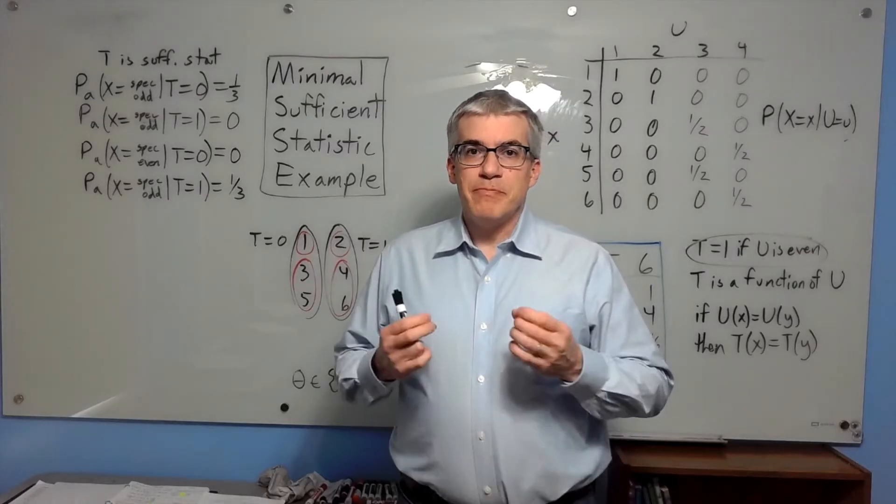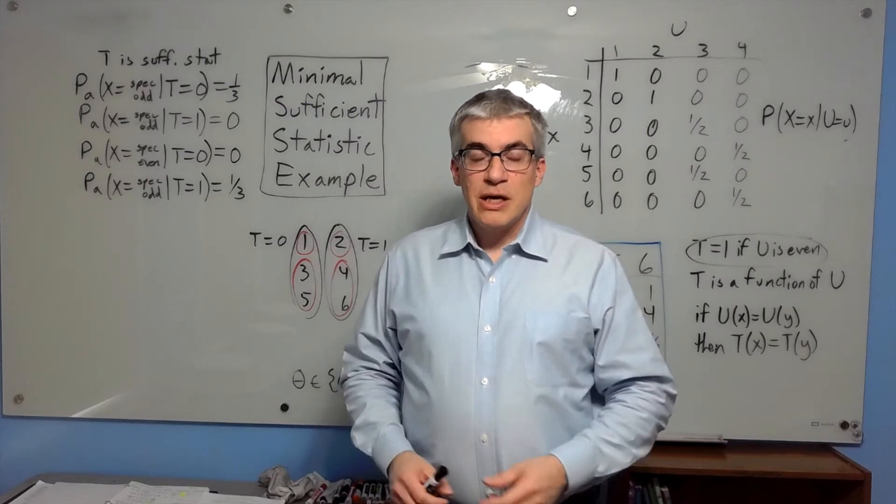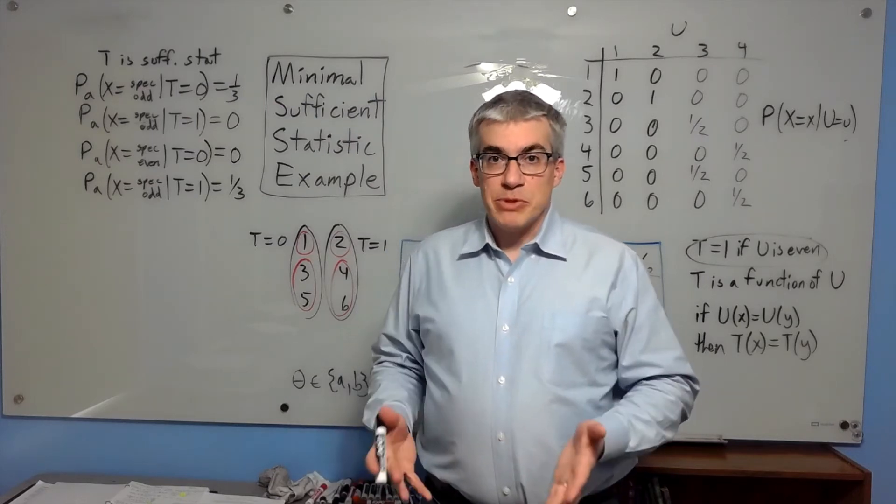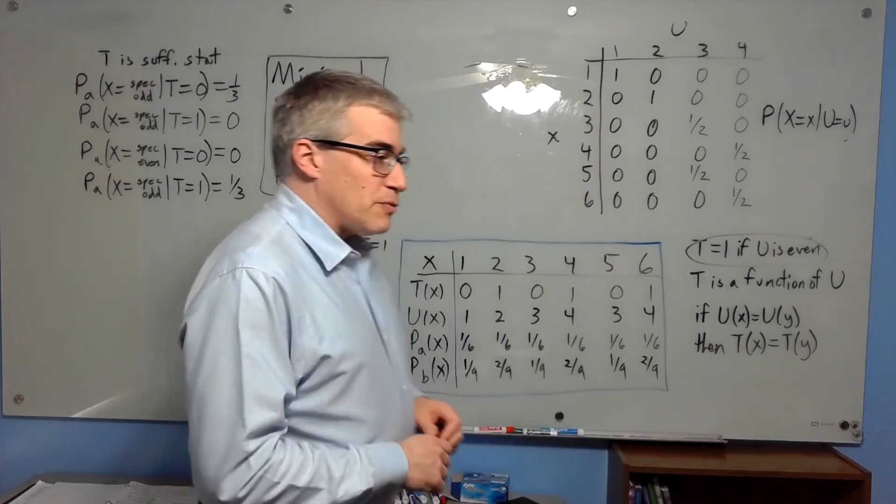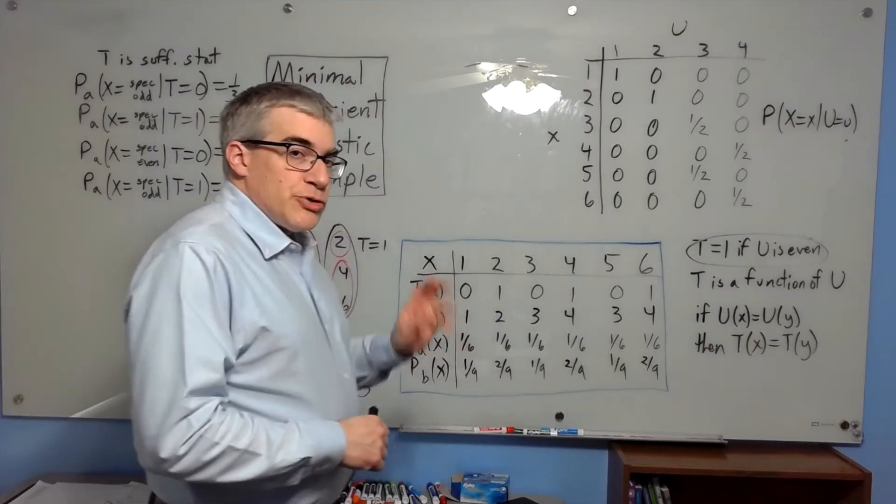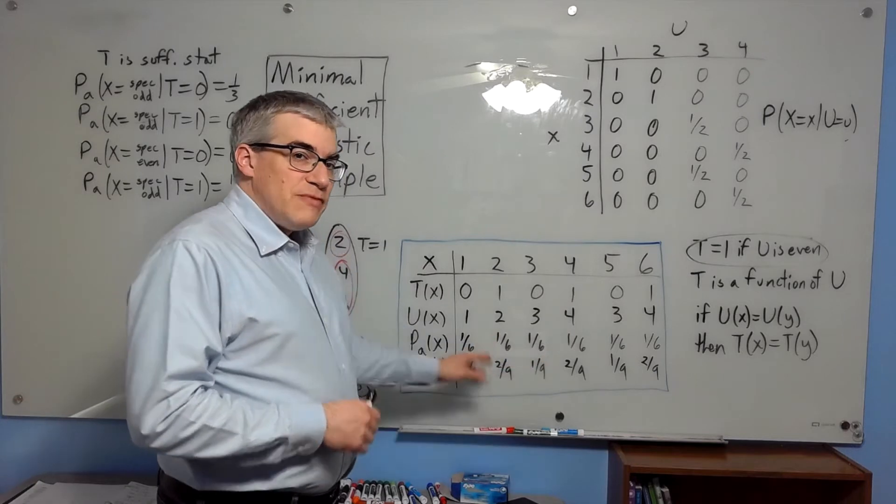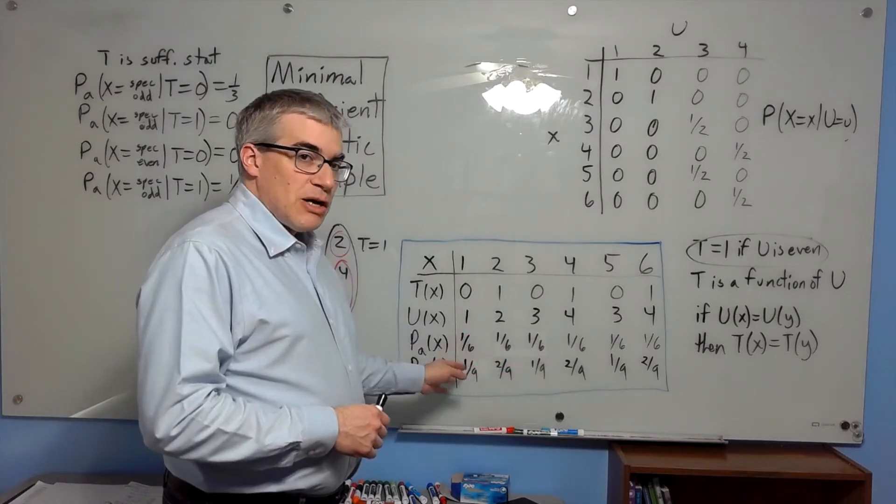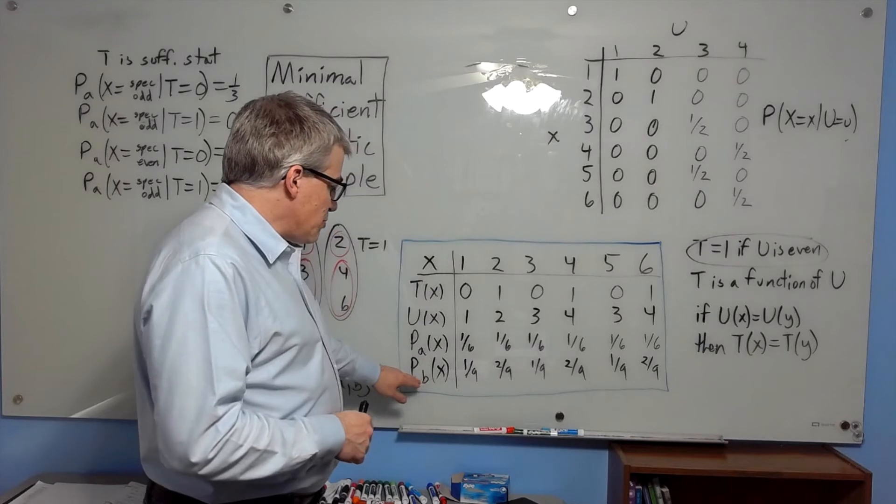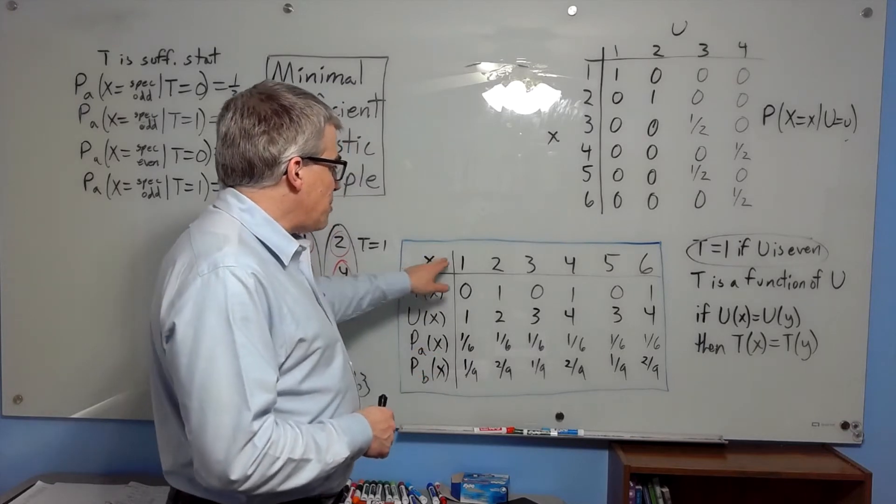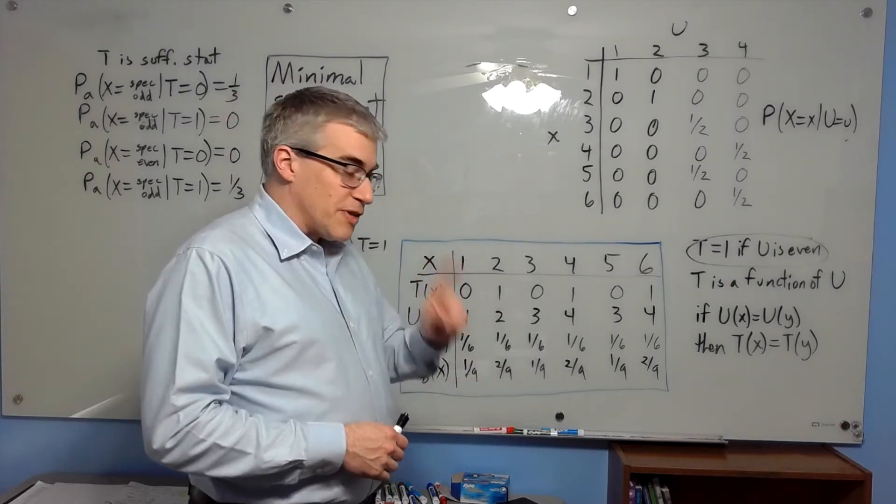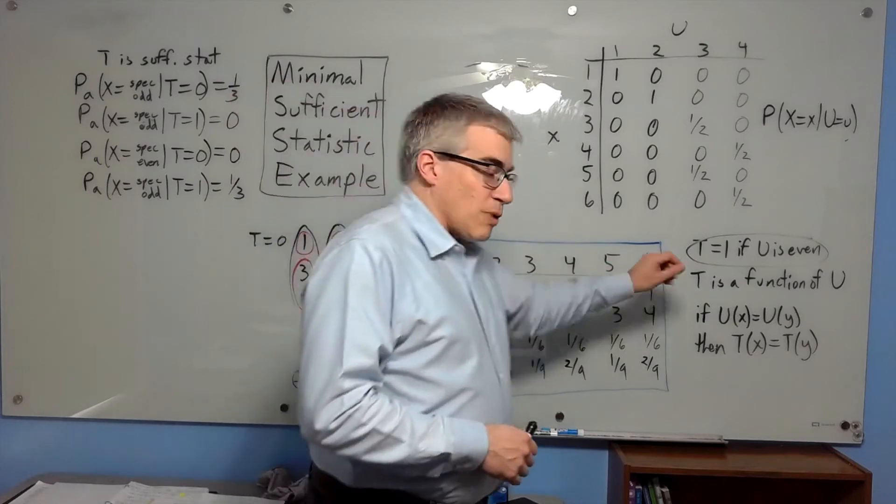In order to understand the minimal sufficient statistic, it helps to have a simple example. Suppose you have a die and there are two possibilities. Either the die is fair, or the even numbers are twice as likely as the odd numbers to come up. So we have two possible probability distributions, and the possible values of x for one roll of the die are the values one through six.